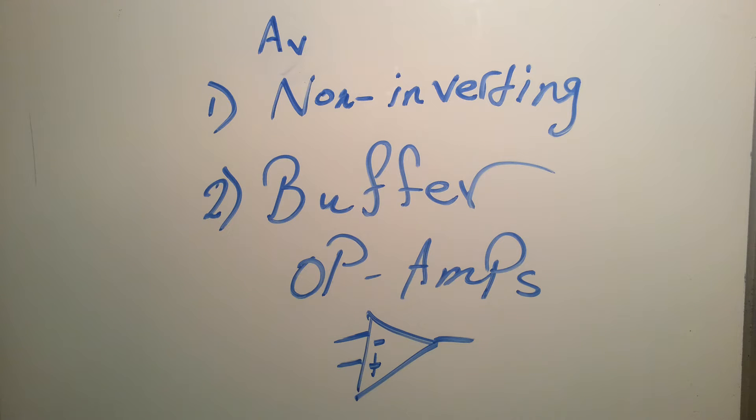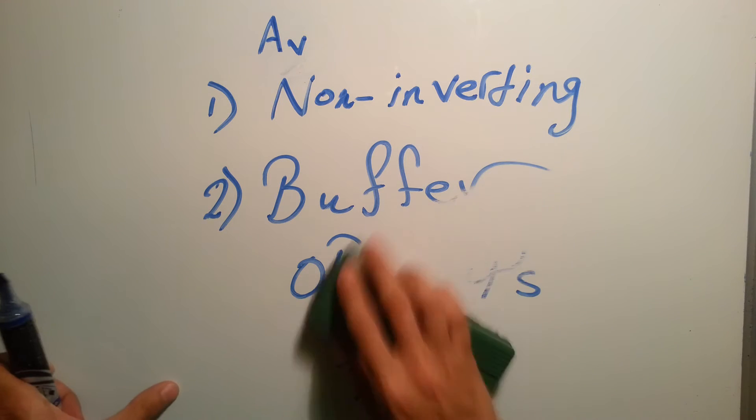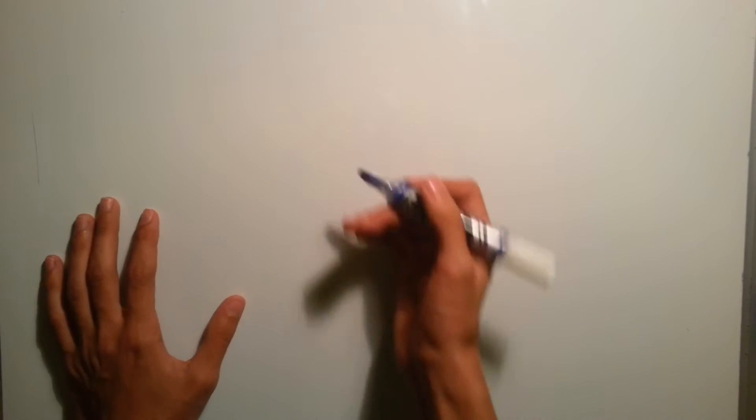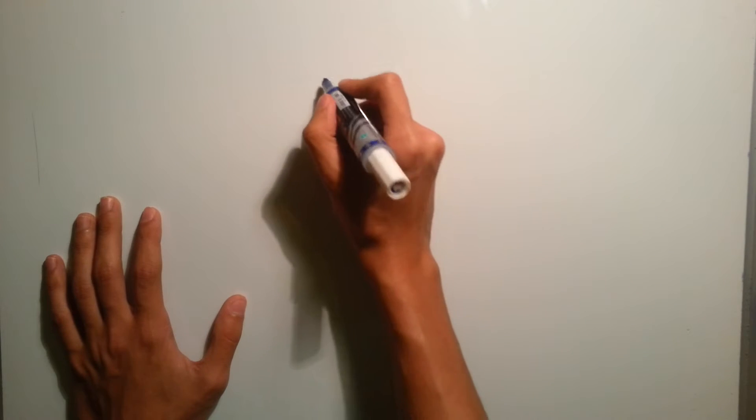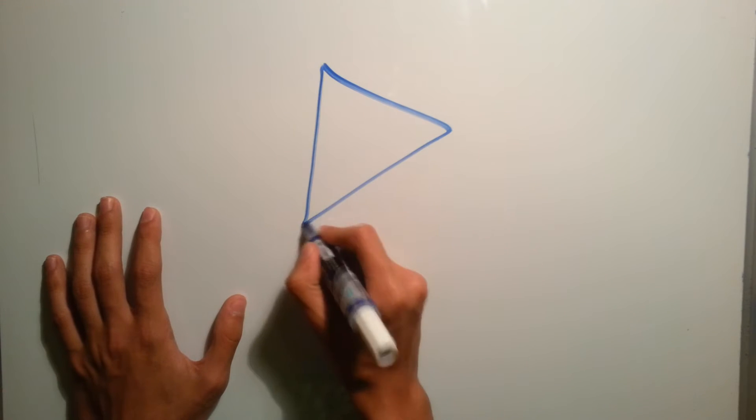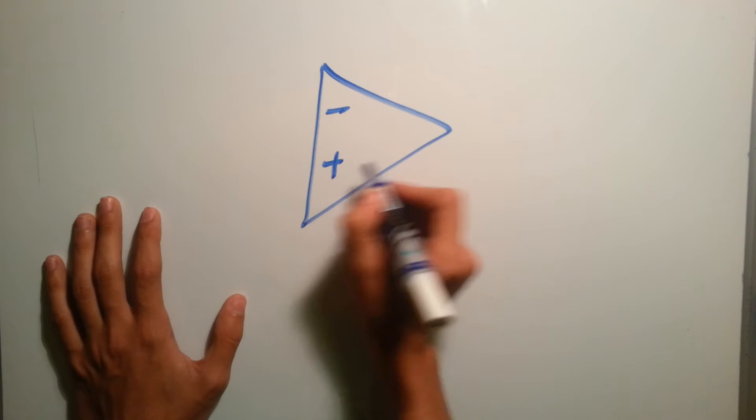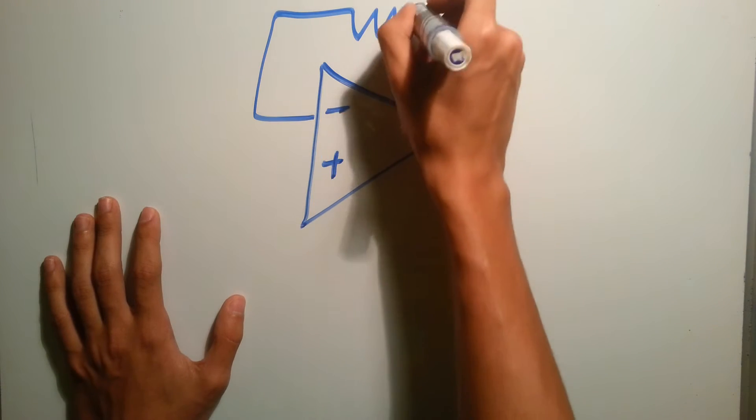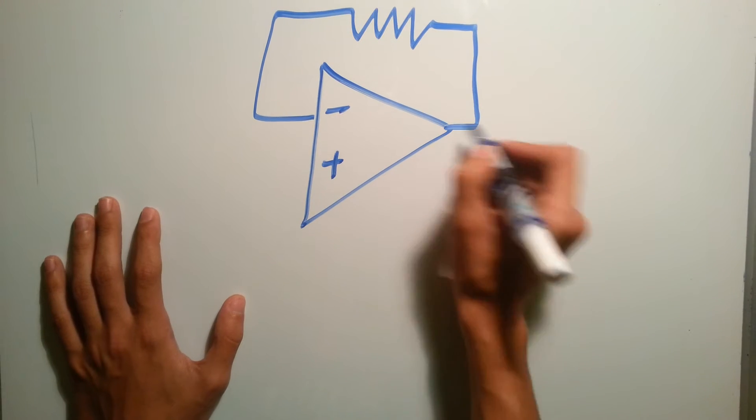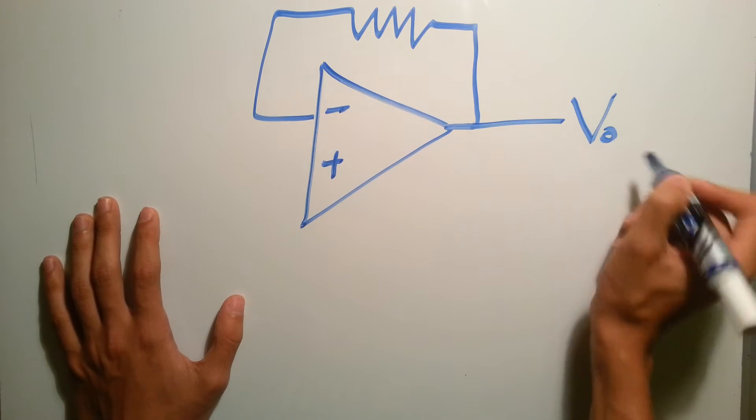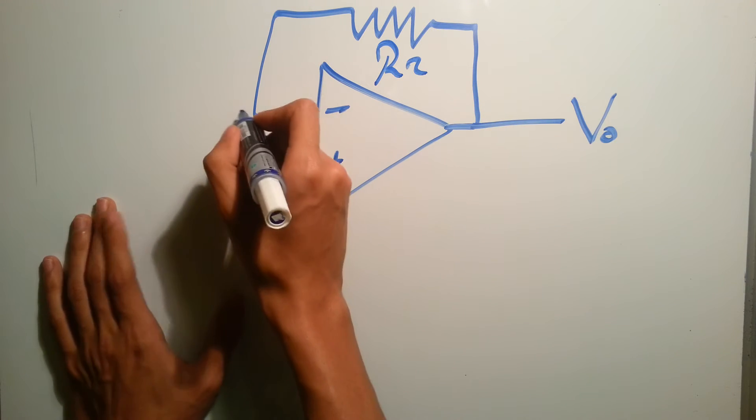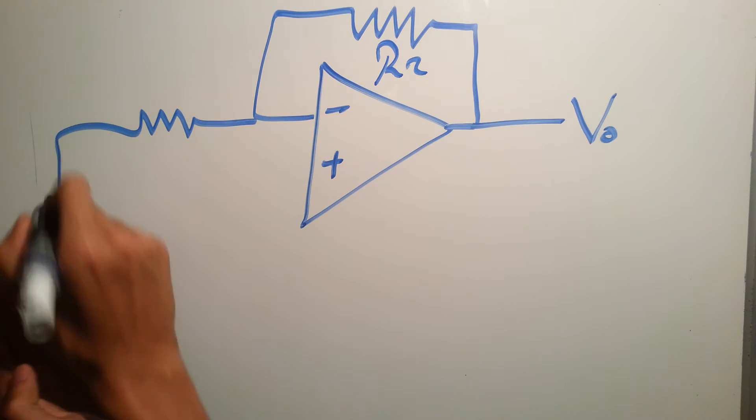So let's start by drawing the non-inverting. This is our op amp, you have negative and positive, and you have your feedback to the output. Let's call this one R2, this resistor, and here we have R1.